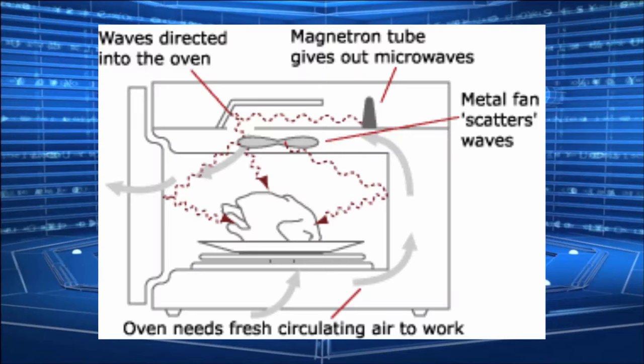Now, in older microwaves, there was a metal fan that would scatter the microwaves and they would go in random directions. But that caused uneven heating. You can see the metal fan here in this diagram that is directing the microwaves.